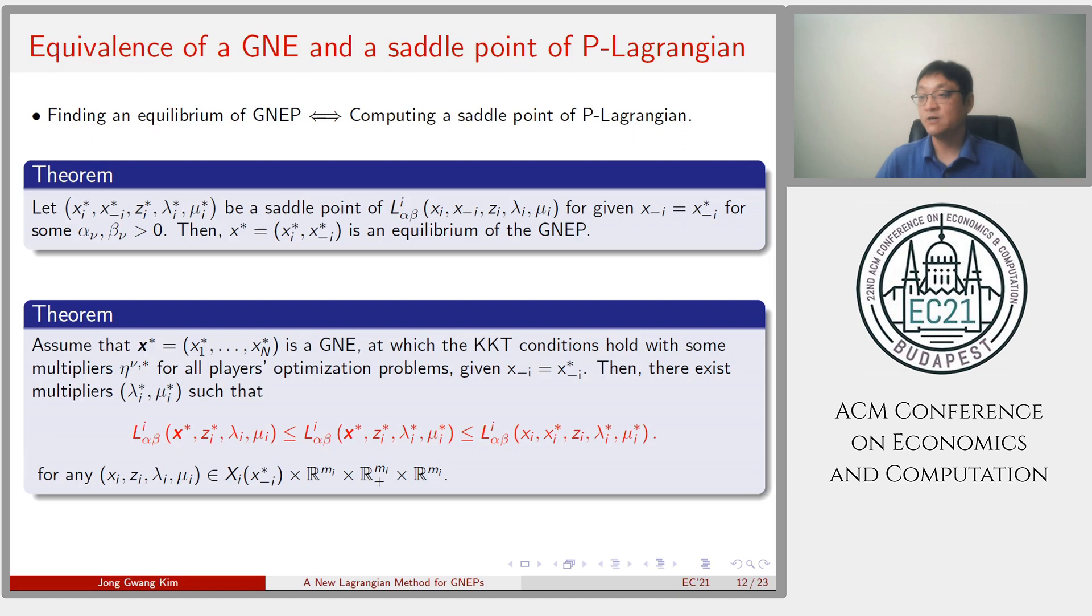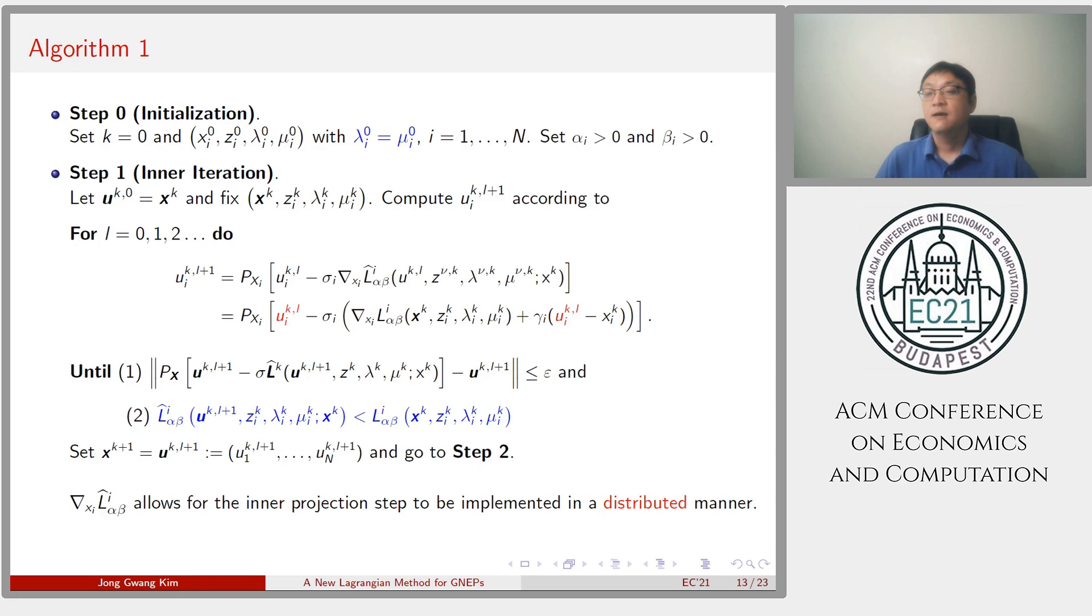In this work, I reformulate the GNEP as a set-point computation problem using the P-Lagrangian and then present an algorithm for computing the set-point. To this end, I establish the equivalence of GNE and a set-point of Lagrangian by proving the two theorems I discuss in detail in the paper with the reduced form of the Lagrangian.